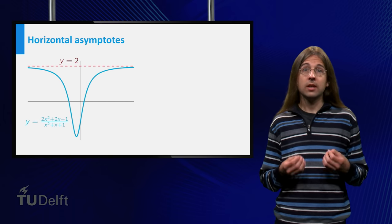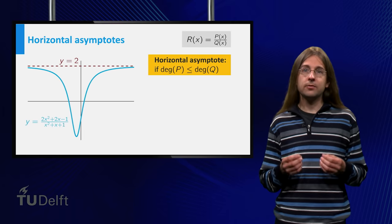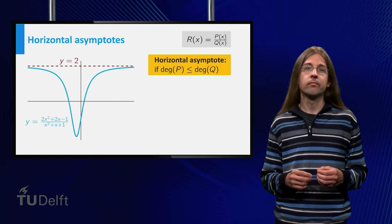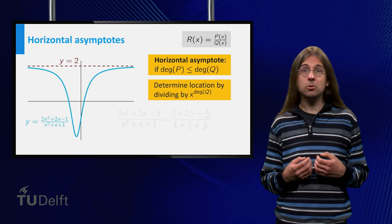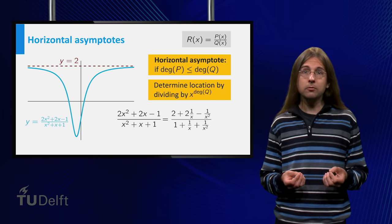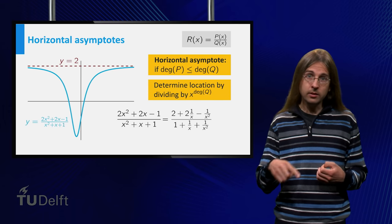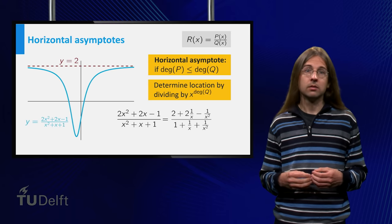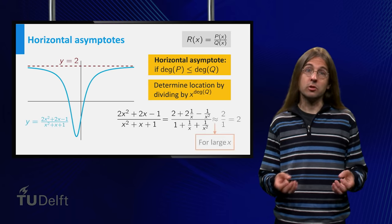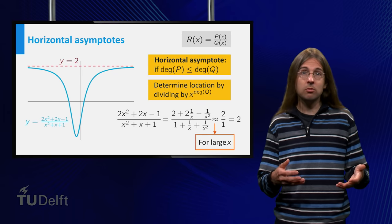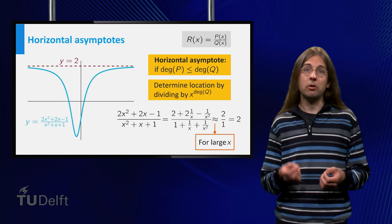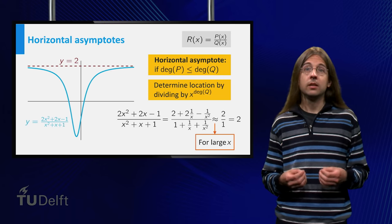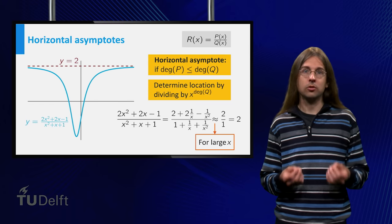A rational function has a horizontal asymptote if the degree of the numerator is at most the degree of the denominator. You can find the location of a horizontal asymptote by dividing both numerator and denominator by the largest power of x in the denominator. For very large x, the terms 1 over x, 1 over x squared, etc. tend to 0, so both numerator and denominator become a constant. In this way you can determine the height of a horizontal asymptote.